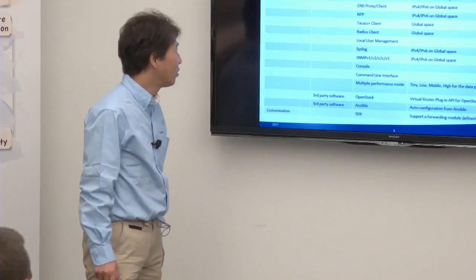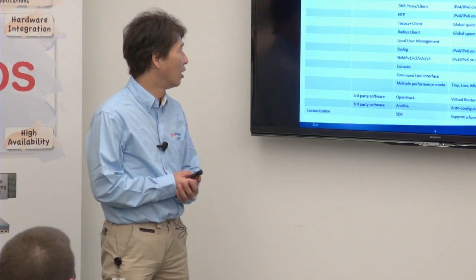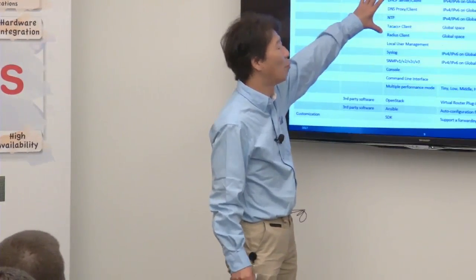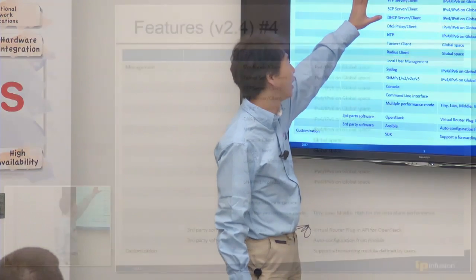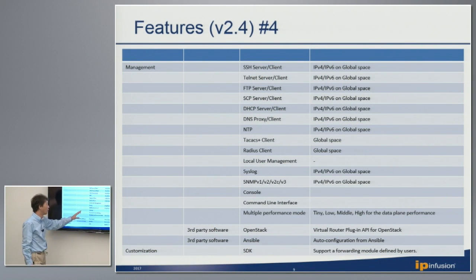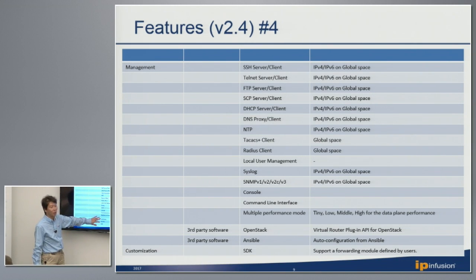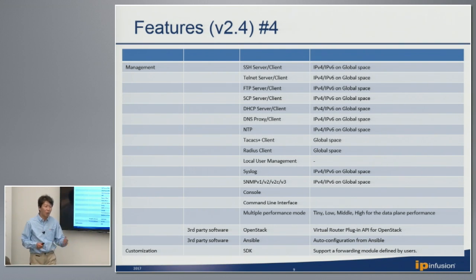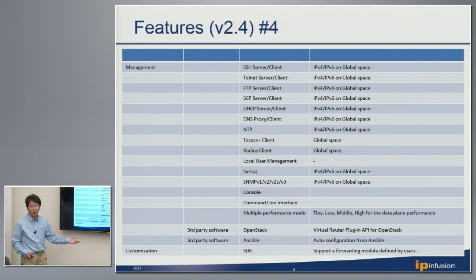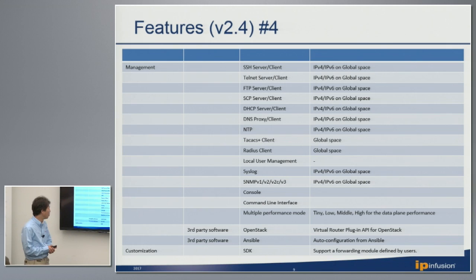Barnos is a VNF solution supporting routing and switching functionality. We support the traditional management framework such as SSH, CLI, SNMP, Syslog, and everything. However, since this is a VNF solution, we also integrate with third-party software such as OpenStack and Ansible. We provide our own API for OpenStack and our own scripts for Ansible, so operators can deploy Barnos from OpenStack and automatically download configuration.